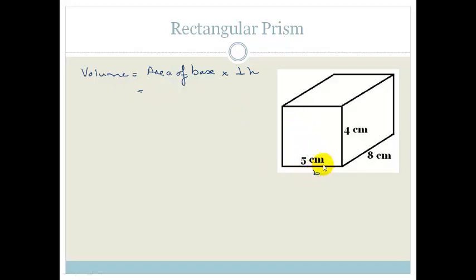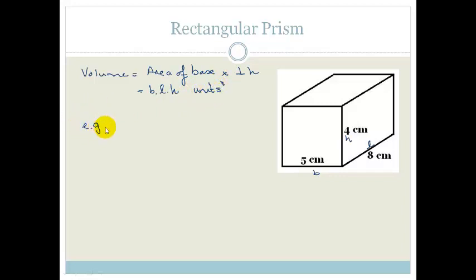If I call this B for breadth, L for length, and H for height, then the volume is going to be B times L times H, and remember it's units cubed. So if we do this example, the volume is equal to 5 times 8 times 4: 5 times 8 is 40, 40 times 4 is 160 cubic centimeters.